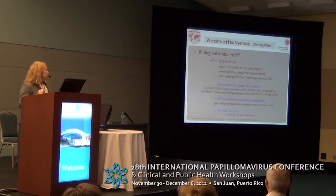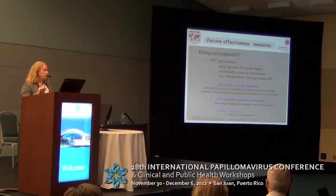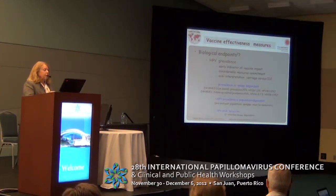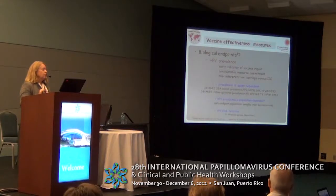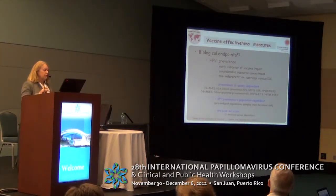Prevalence is assay-dependent — I give the example of two NHANES studies from the US where prevalence was 27% in the first study but almost double that in the second. If you look carefully, the methodology changed between studies. You must use the same assay if you're going to compare. Second, prevalence is population-dependent — if you're looking at pre- and post-vaccine populations, they must be consistent. And when measuring HPV DNA detection, what does it mean? Is that infection or deposition from the night before? You have to think carefully about how samples are collected.